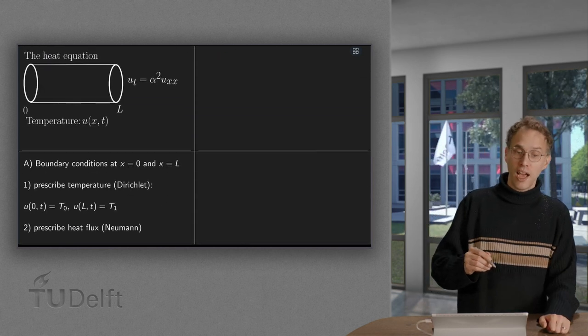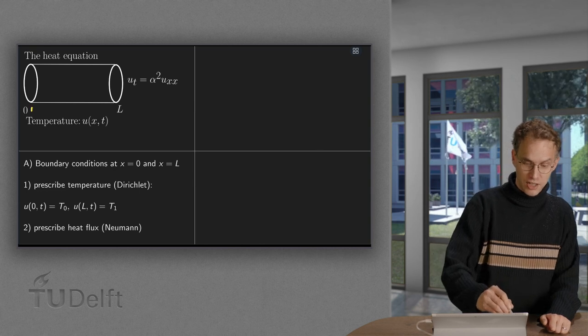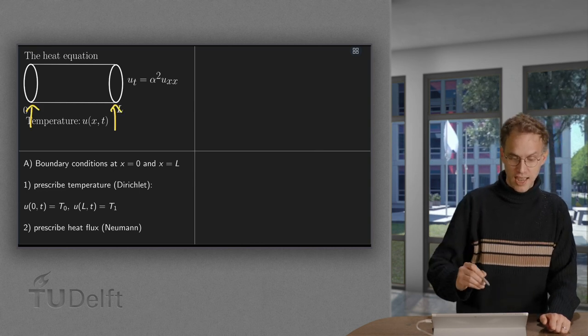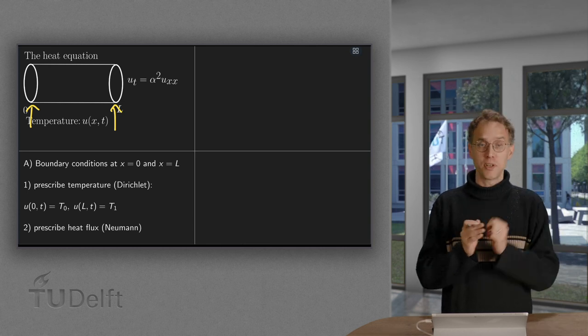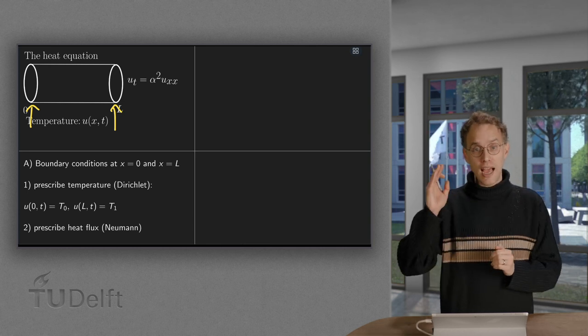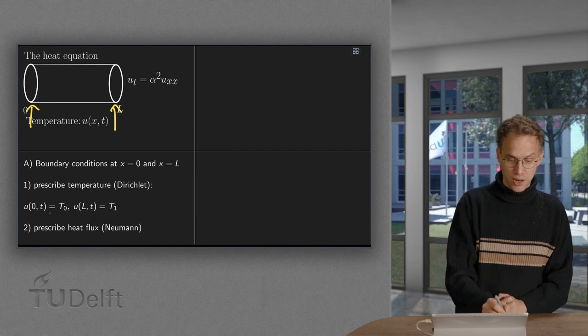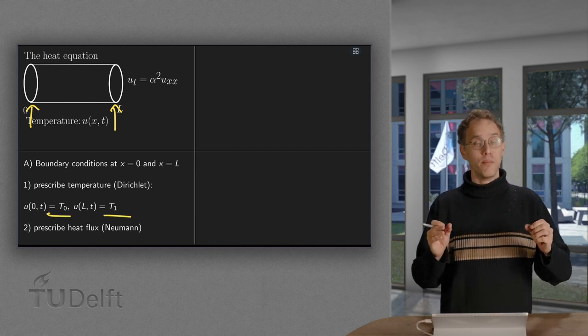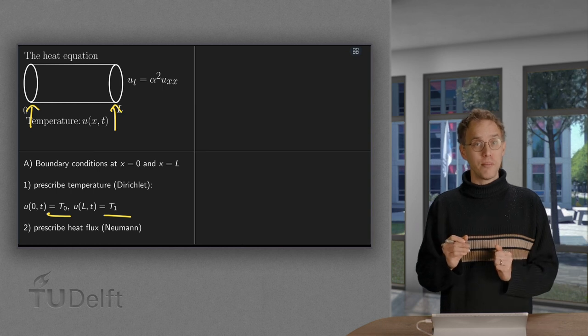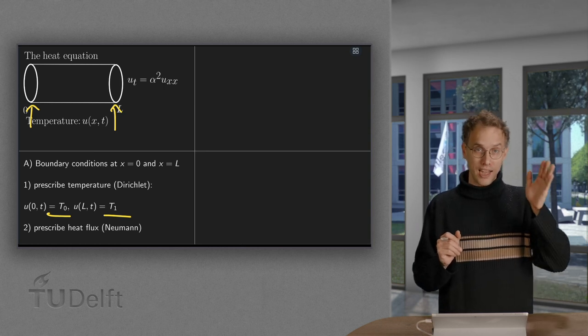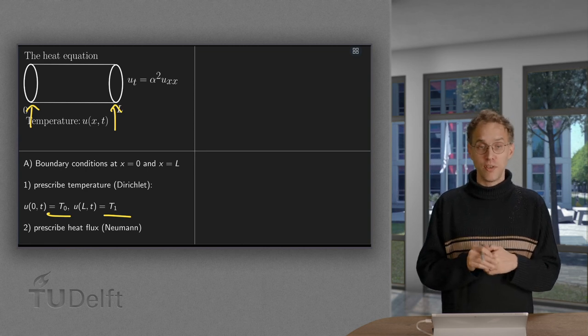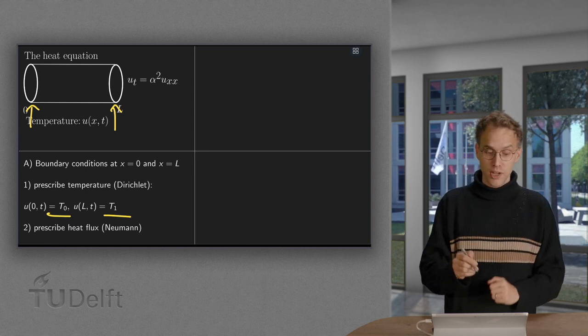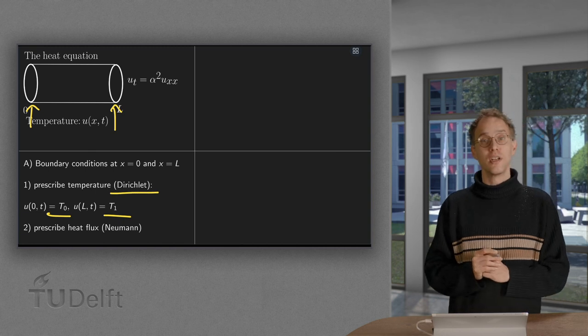For boundary conditions, we will have to tell something at x equals 0 and x equals L. We can, for example, prescribe what the temperature is at 0 and at L, T0 and T1. We can make sure the rod is kept at a constant temperature at 0 and at L. Such a type of boundary condition, where you specify the value of u, is called Dirichlet boundary condition.